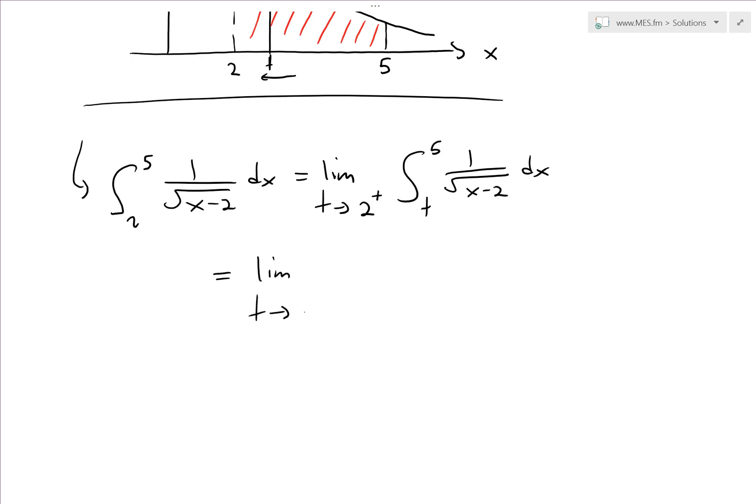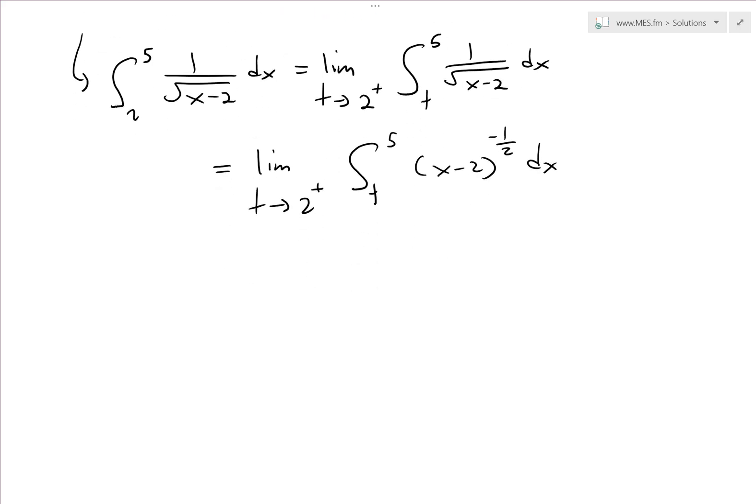To make it easier to evaluate, the easiest way is to rewrite how this looks by putting this on top, so x minus 2 to the power of negative one-half. This makes it easier to apply the integral.